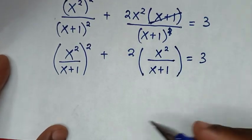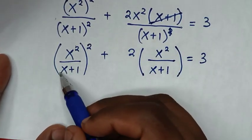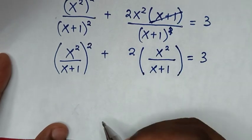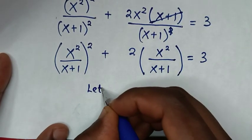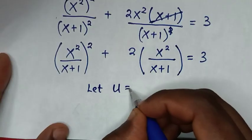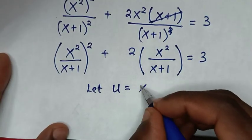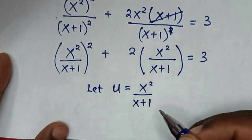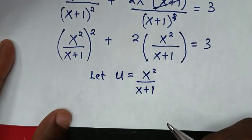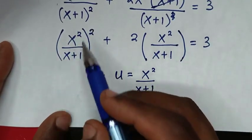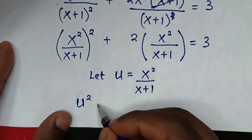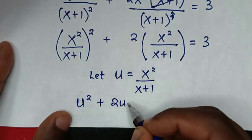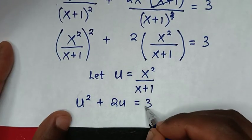Then from here we can see that x²/(x+1) appears repeatedly. So we let u = x²/(x+1). Then in here it will be u², then plus 2u equals 3.